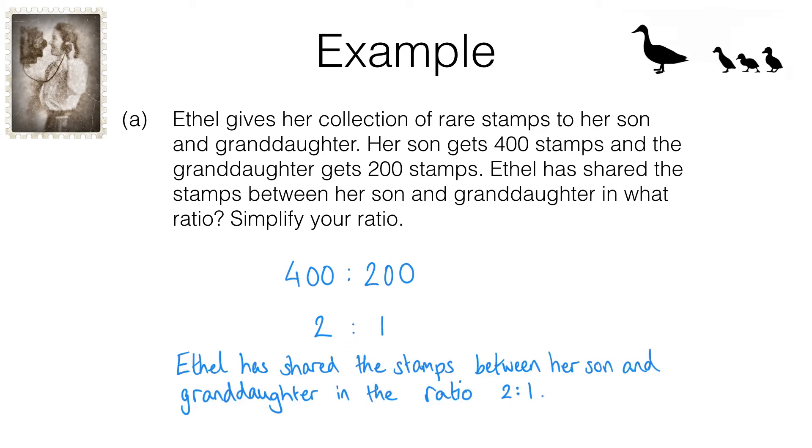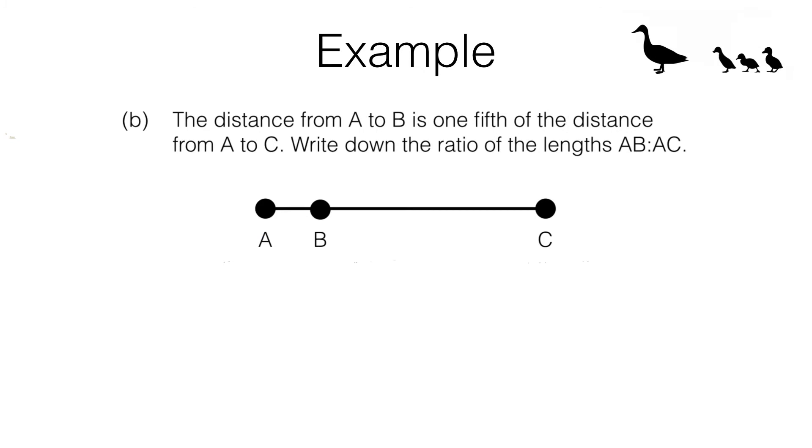To show the answer as a full sentence we've got Ethel has shared the stamps between her son and granddaughter in the ratio 2 to 1. Here is example B. We are told that the distance from A to B is one fifth of the distance from A to C. We need to write down the ratio of the lengths AB to AC.